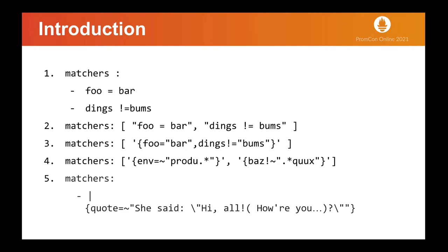Example 4 shows regex matchers. If environment matches anything that starts with production and when Baz is not equal to anything that ends with Qux, then the matchers are valid. In example 5, we can use YAML block quoting, and if we do that, we only need to worry about the open matrix escaping inside the block.